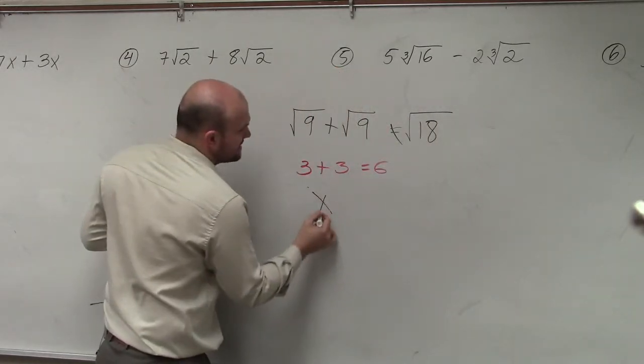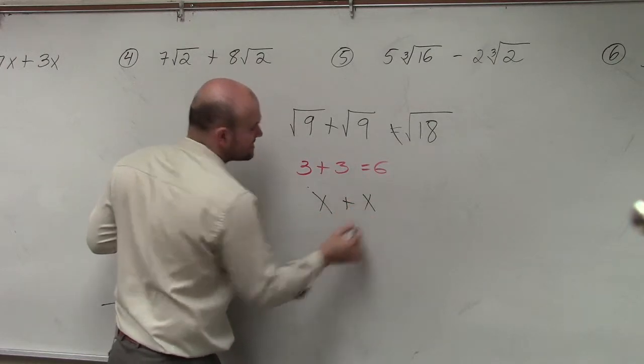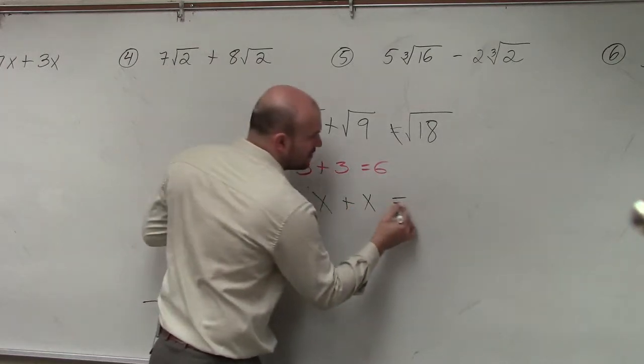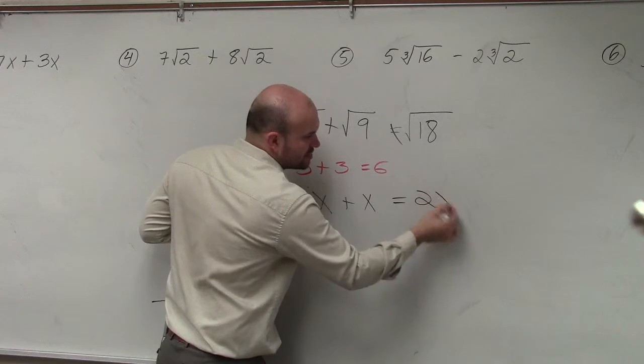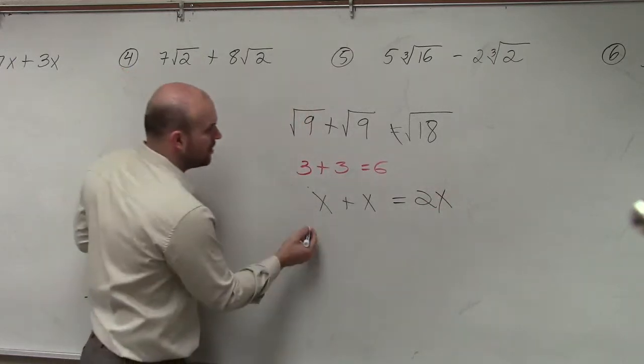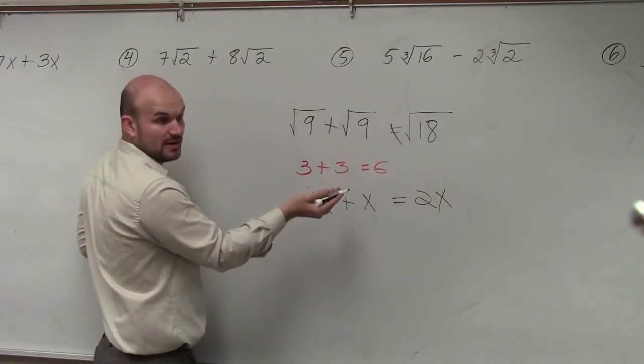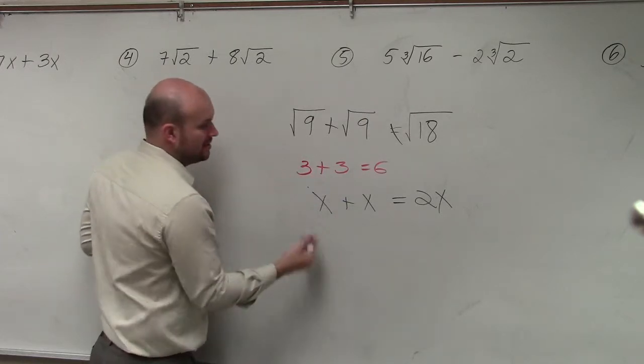If I was going to say, what is x plus x, we have learned that x plus x is equal to 2x. So no, x times x would be x squared, right? Multiplying would give you the squaring.